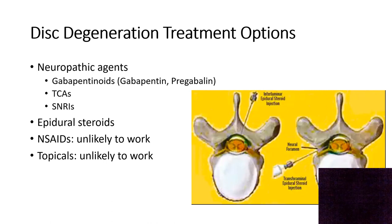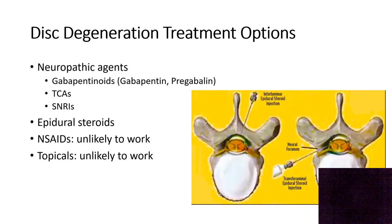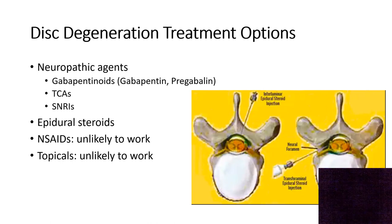For disc degeneration, neuropathic agents tend to be the most effective for pain that leaves your neck and goes down into your arms. These can be gabapentinoids like gabapentin or pregabalin, known by their trade names Neurontin or Lyrica. They can also be tricyclic antidepressants or SNRIs. Gabapentinoids and tricyclics do come with a sedation profile, which is why some folks don't like them. They work particularly well for nerve-type pain — usually pain experienced in the arms coming from the neck — and work okay for neck pain itself, though relief may be limited given the complex mix of nerve, muscle, and joint pain.